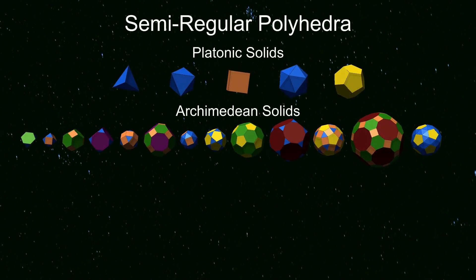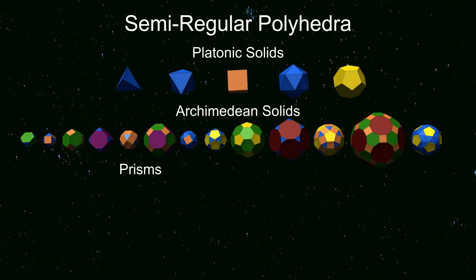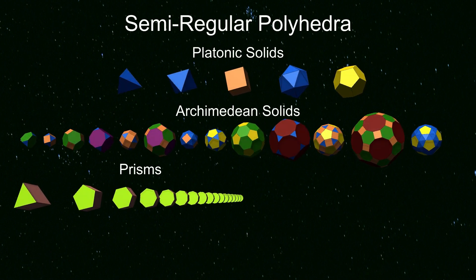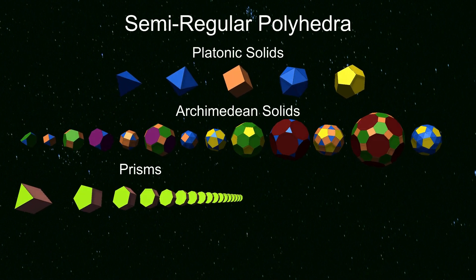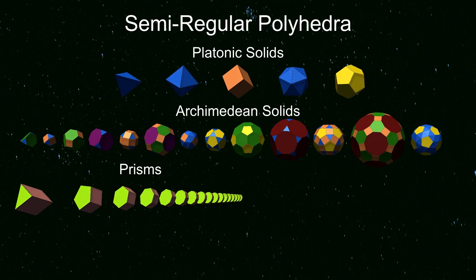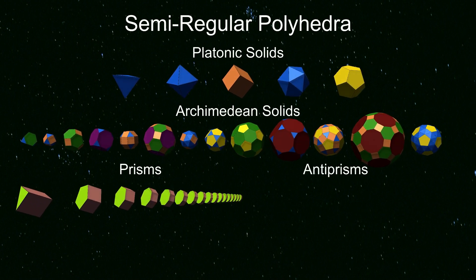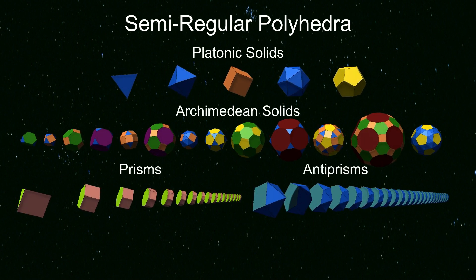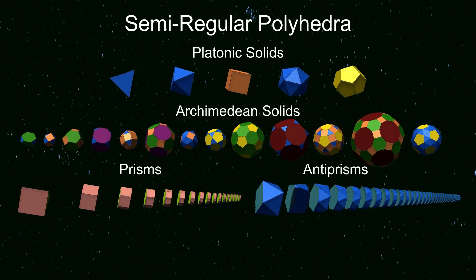Third are the prisms, the infinite family of solids with two squares and another polygon at each vertex. And fourth are the antiprisms, another infinite family with three triangles and another polygon at each vertex.